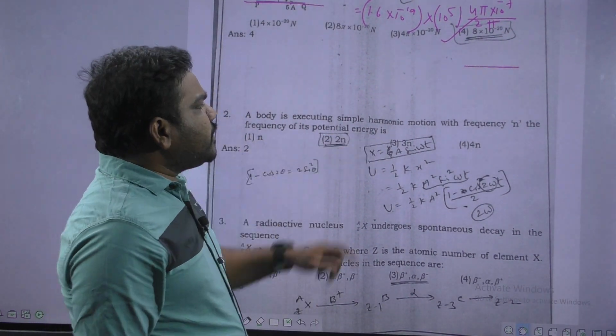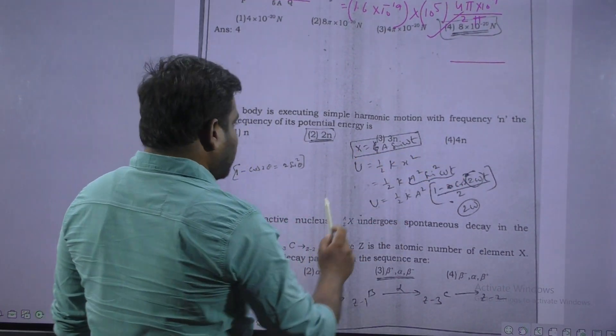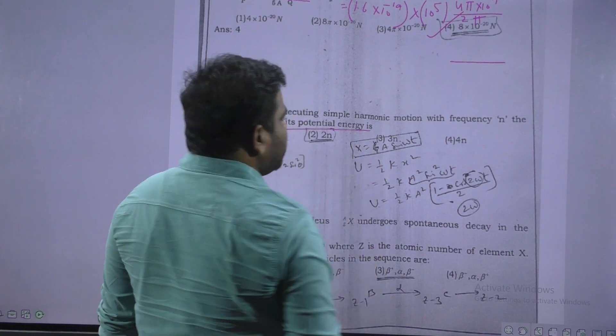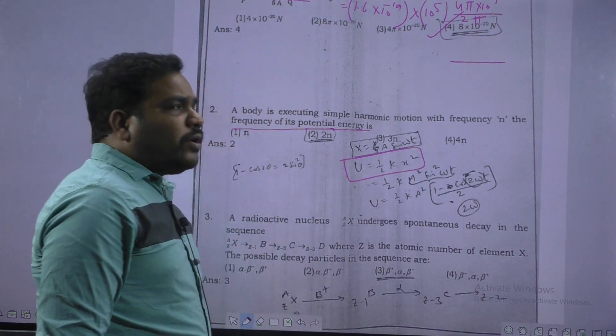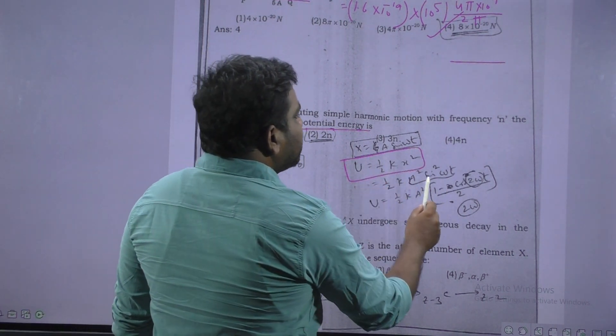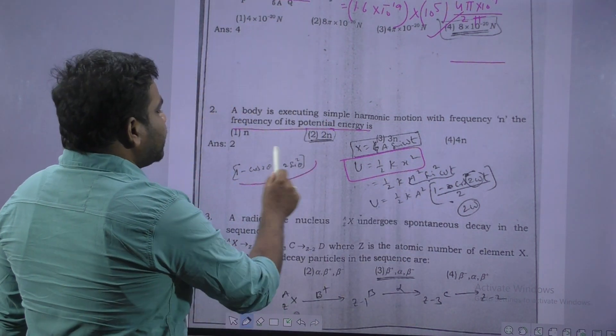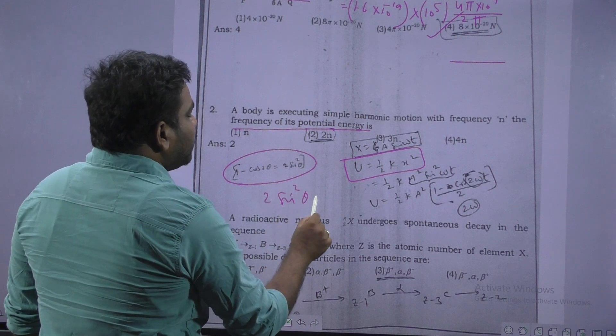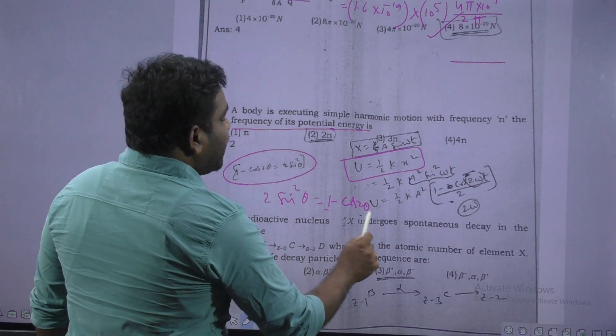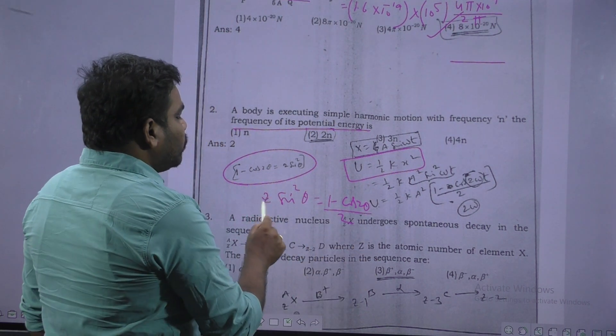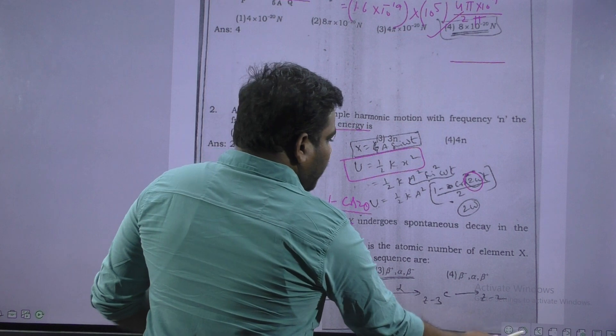Next question. A body is executing simple harmonic motion. With the frequency N, frequency of the potential energy is asked. We know potential energy of SHM. U is equal to half KX square. X means here displacement, A square sin square omega t. But sin square omega t can be written as, you know formula, 2 sin square theta is equal to 1 minus cos 2 theta. Sin square theta means 1 minus cos 2 theta by 2. So I applied here. This is 2 omega, the frequency of potential energy.